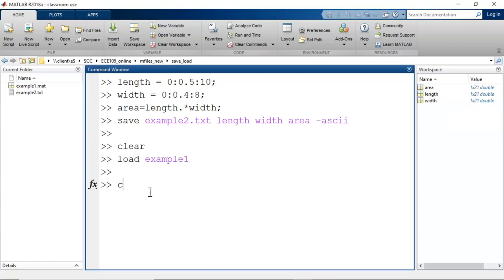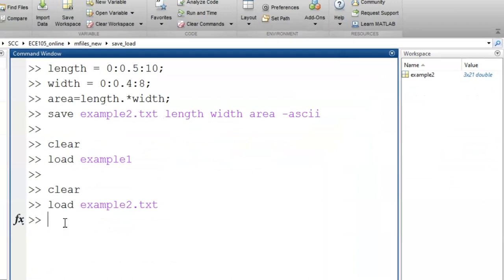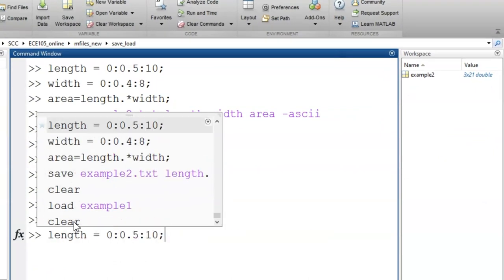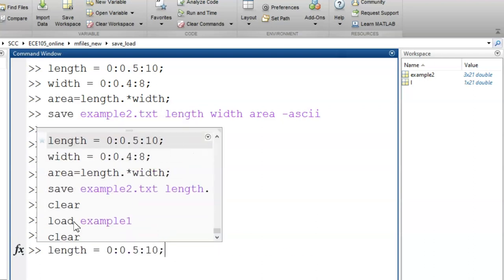For the .txt example, I clear the workspace again. Now I load in the example2 file. We see just one variable appears. This variable holds a 3 by 21 matrix, or in other words, all three rows of data in a single table. So, with this bit of extra work, I can successfully isolate the three original variables, but now with new names of my choosing.